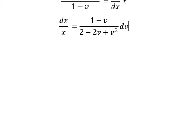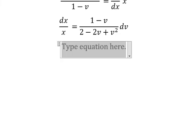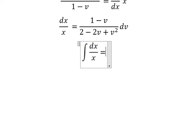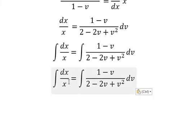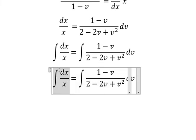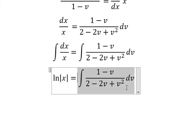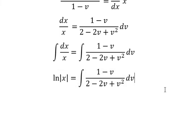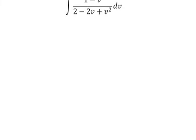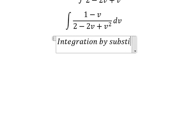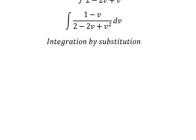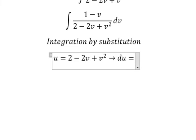Next we put the integration for both sides. So this one we have ln of the absolute value of x. Now we need to concentrate on this one. So we can use integration by substitution. So I will put u equals to this one. Later that we do the derivative for both sides.